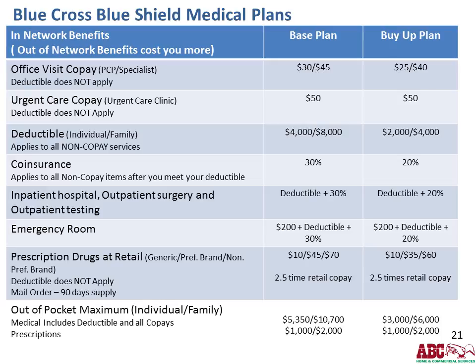When you go to an emergency room, you have a $200 facility copayment, but all other services are applied toward your deductible and coinsurance. Please reserve the emergency room for true emergencies and use urgent care when you can. Prescription drugs at retail are broken out by generic ($10 base / $10 buy-up), preferred brand ($45 base / $35 buy-up), and non-preferred brand ($70 base / $60 buy-up). You do not have to meet your deductible for pharmacy items, and mail order provides a 90-day supply at two-and-a-half times your copayment — saving you half a copayment.